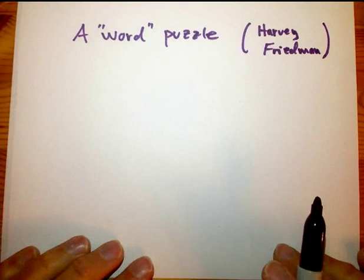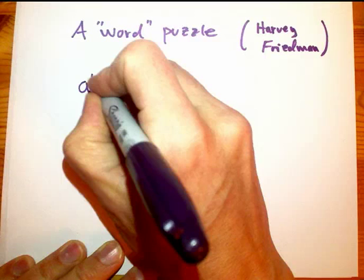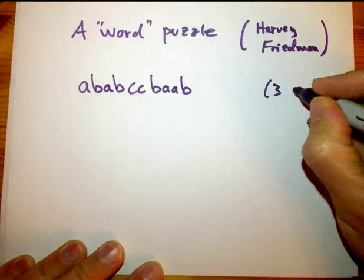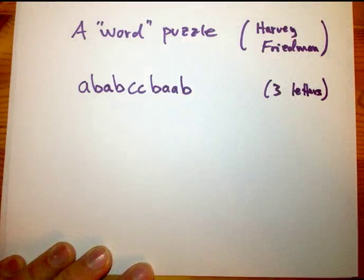Here's the idea. We're going to write down a string of letters, like ABABCCBAAB. Here we use three letters, or symbols, or you could use the numbers 1, 2, 3, or the numbers 0, 1, 2, it doesn't matter.